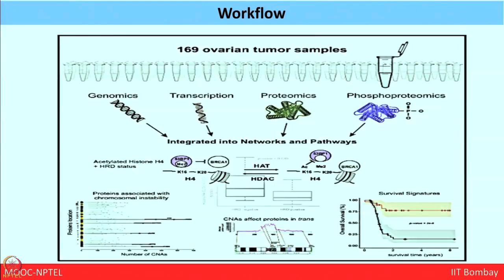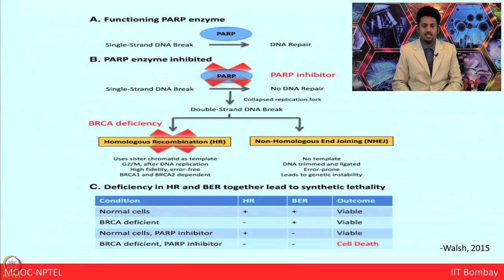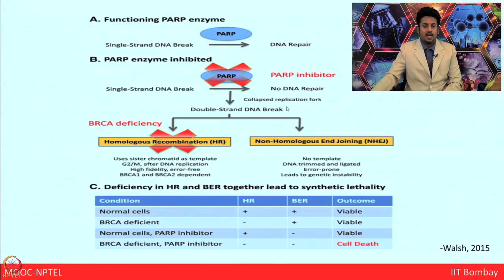To demonstrate the power of proteogenomics, one study took 169 ovarian tumor samples from TCGA metadata and tried to correlate genomics, transcriptomics, proteomics, and phosphoproteomics. The diagram from Walsh et al. 2015 shows the functioning of PARP enzyme in DNA repair of single-strand DNA breaks. If PARP enzyme is inhibited, no repair takes place, leading to collapse of the replication fork. BRCA deficiency does not allow homologous recombination, and deficiency in both homologous recombination and base excision repair together lead to synthetic lethality.